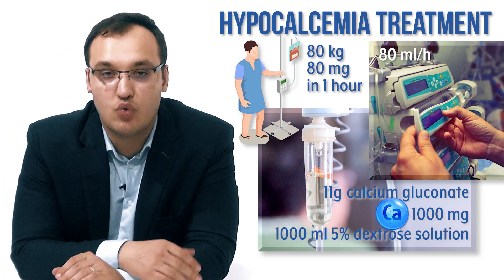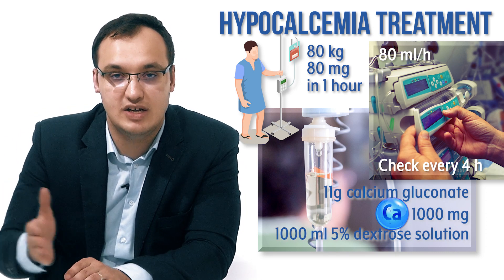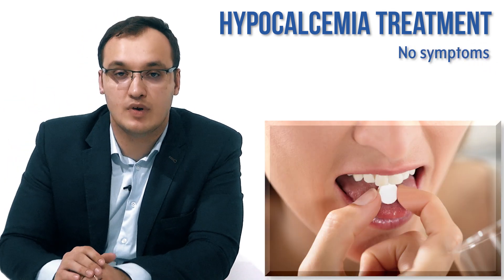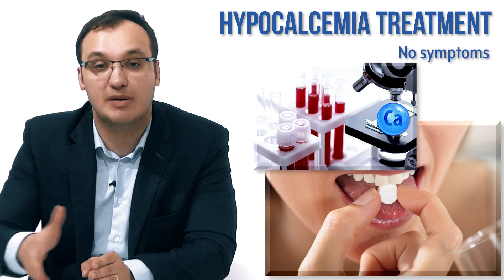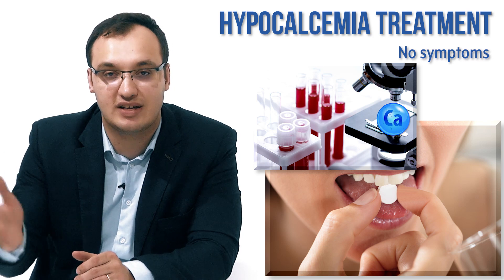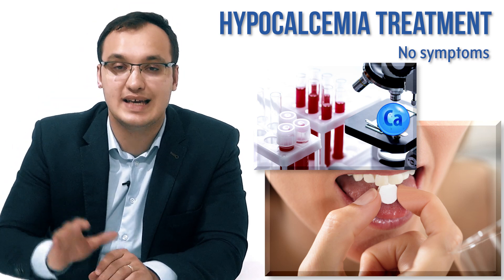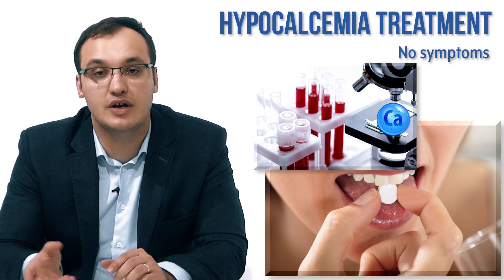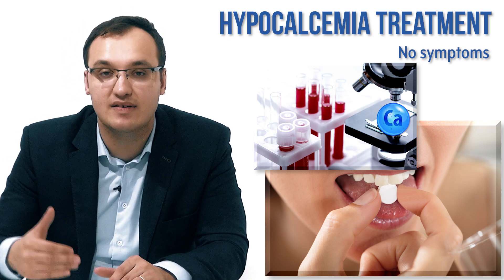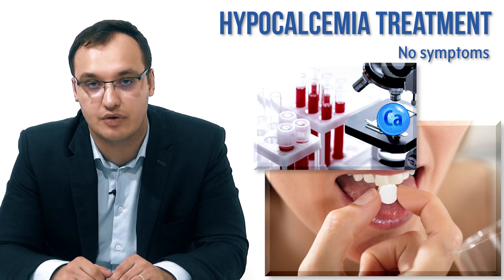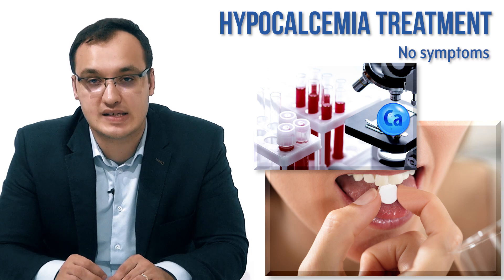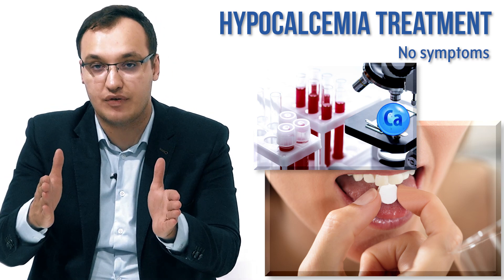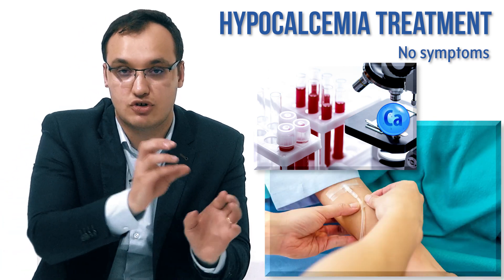For monitoring: when treating intravenously, we check the calcium level every four hours. When dealing with oral medications for asymptomatic patients, we only need to check calcium, for example, every week. If after one week the calcium is stable, then we can check it every three months. If the calcium level after one week is still low, please increase the dose and check again one week later. If you reach the maximum oral dose, switch from oral to intravenous.